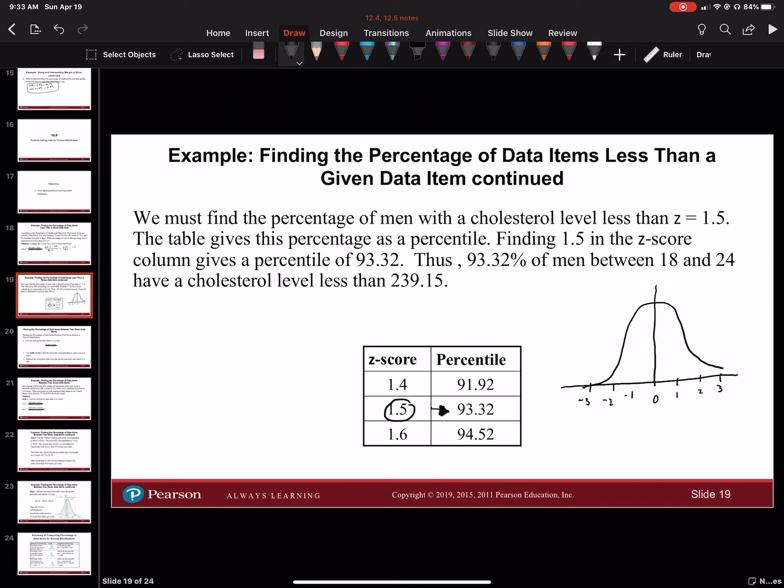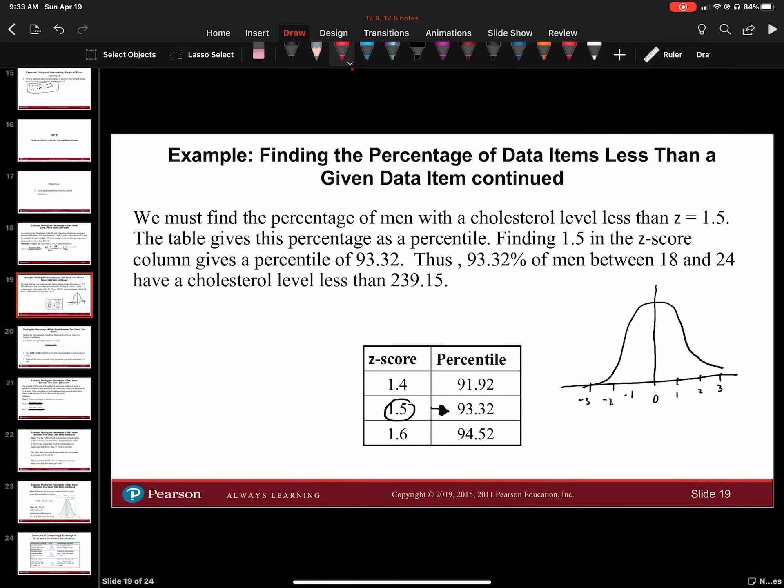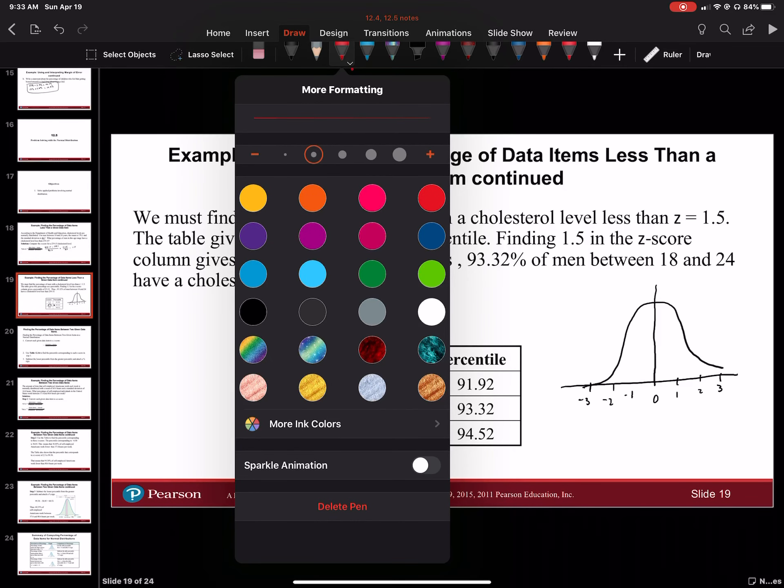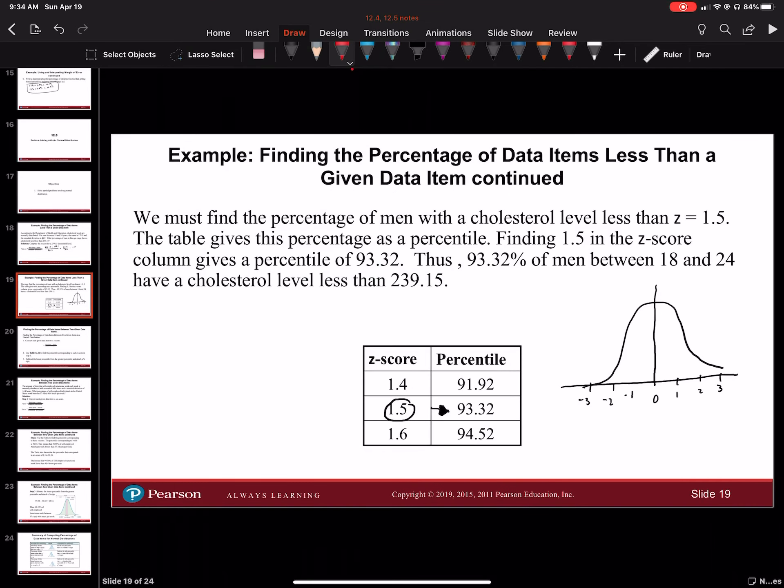When you look at the z-score table, 1.5 would be around here. If we drew an imaginary line through that, everything below would be in that direction, because a standard distribution is symmetric.